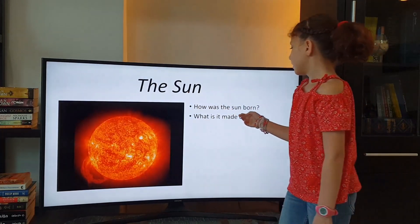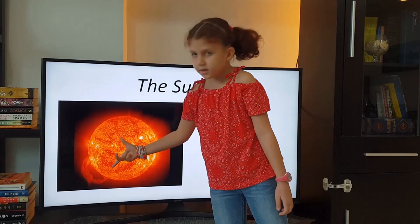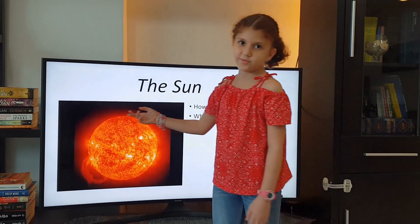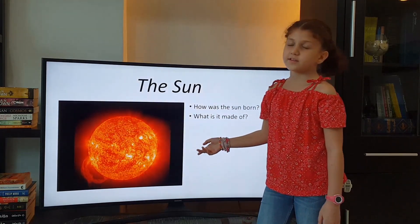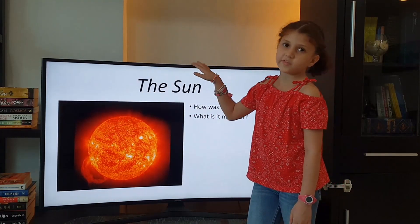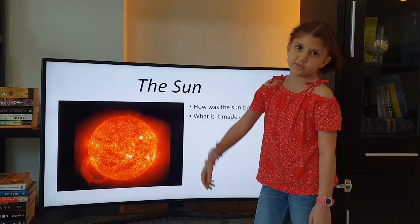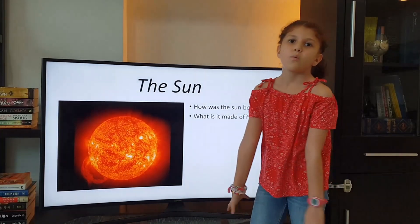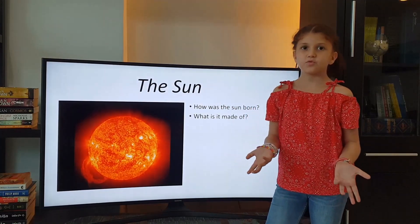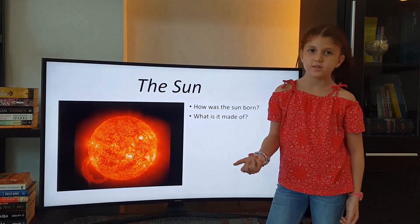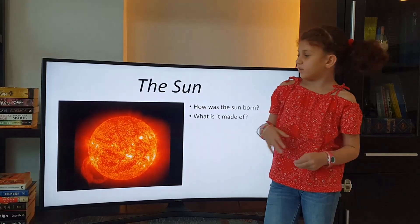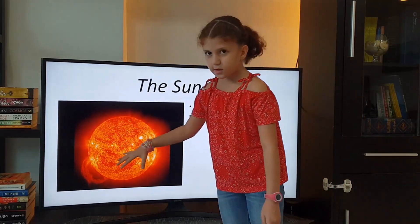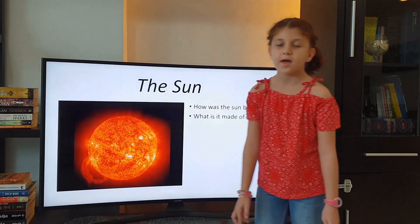The Sun is our local star — the star of the solar system. It is not the only star which has a solar system. The Sun was born when a gas cloud collapsed to form rings of gas and dust, and in the middle, a nuclear furnace fired up and the Sun was born.